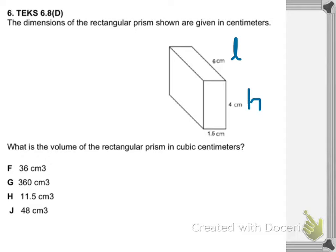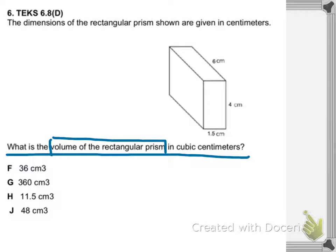On this problem, problem number six, we're going to find the volume of a rectangular prism in cubic centimeters. Label the length, width, and height. Before doing that, remember you need to use the strategies: read the question, underline the question, and box keywords. We need to find the volume of the prism in cubic centimeters.